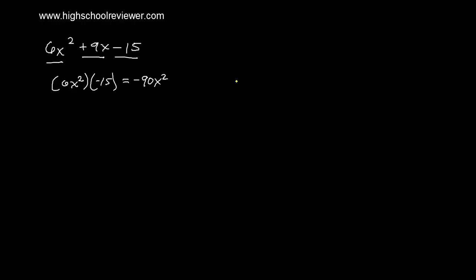Let's get the factors of negative 90x squared. Since our middle term is positive, the larger factor of negative 90x squared must also be positive. Let's try negative 1x and 90x. Negative 1x plus 90x gives 89x — not equal to positive 9x. Let's try negative 2x and positive 45x. Negative 2x plus 45x gives positive 43x — not equal to our middle term.